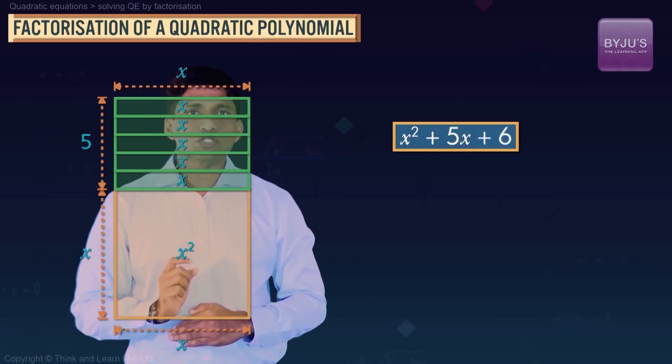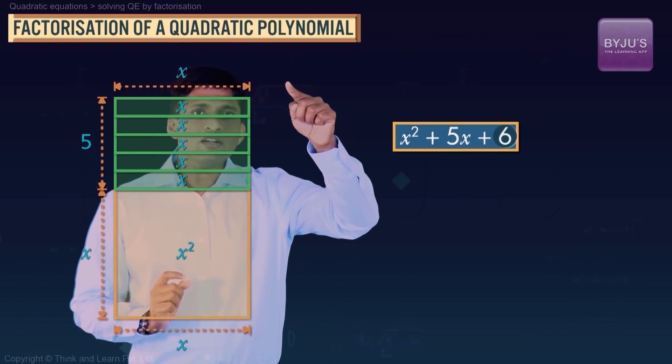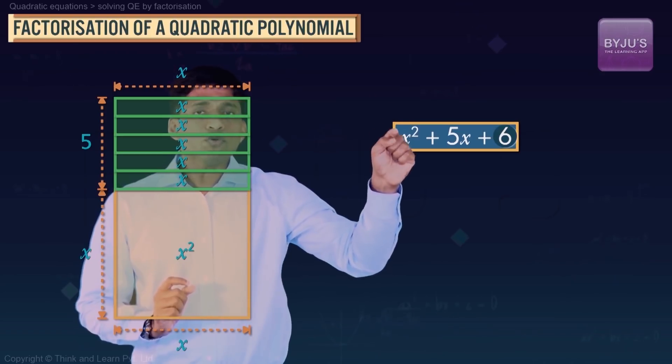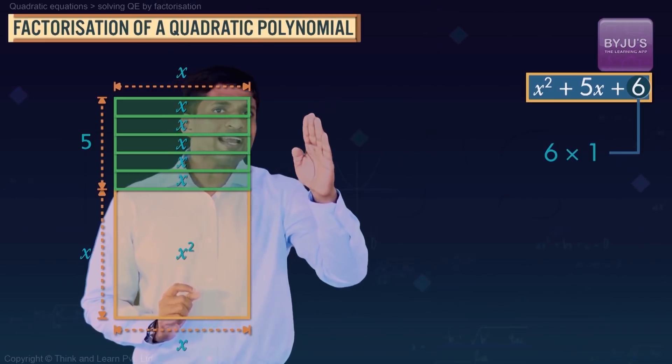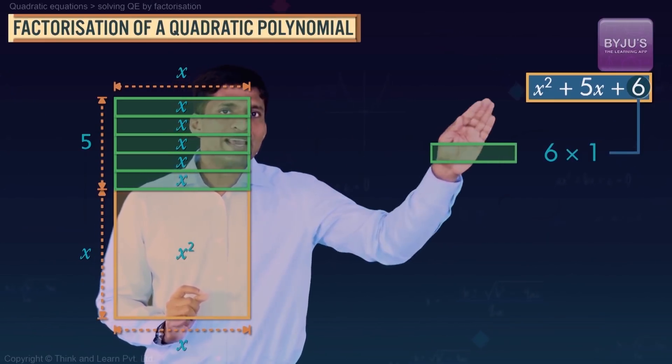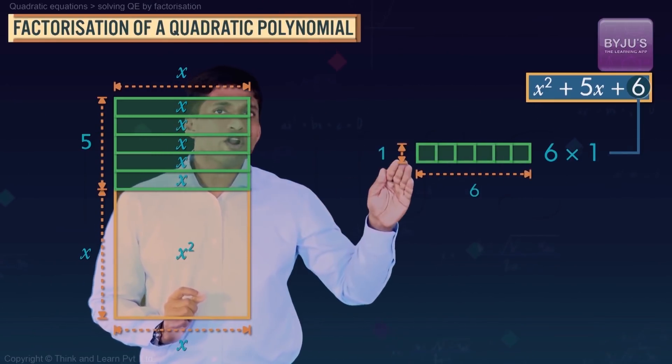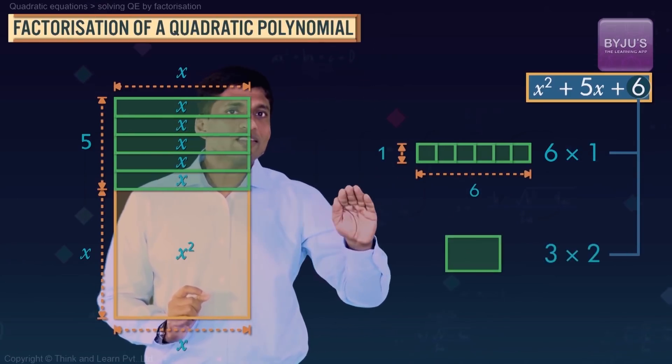But as per our method of factorization, that 6 into 1 you are supposed to write as product of two numbers. You can either write it as 6 into 1, so in the rectangle it looks like this where length is 6 and breadth is 1, or you can take it as 3 into 2, where the length is 3 and breadth is 2.